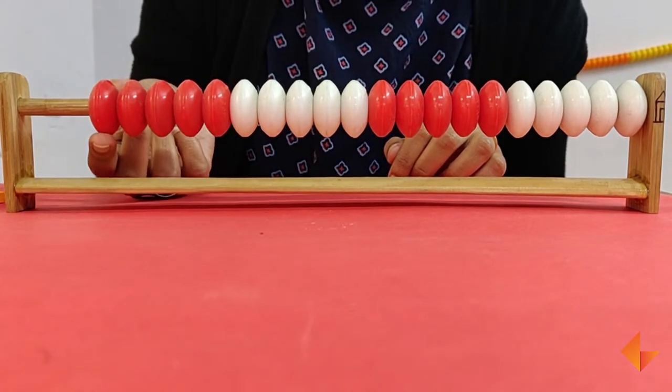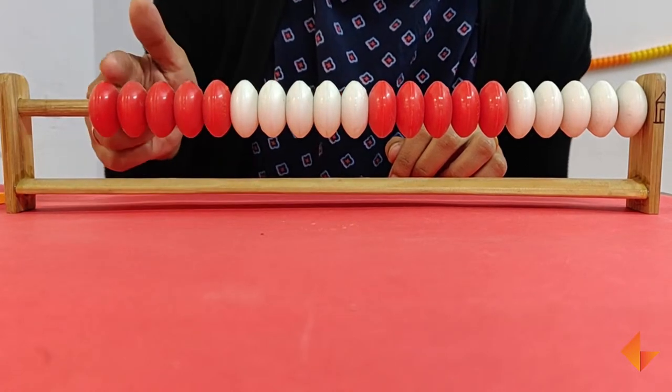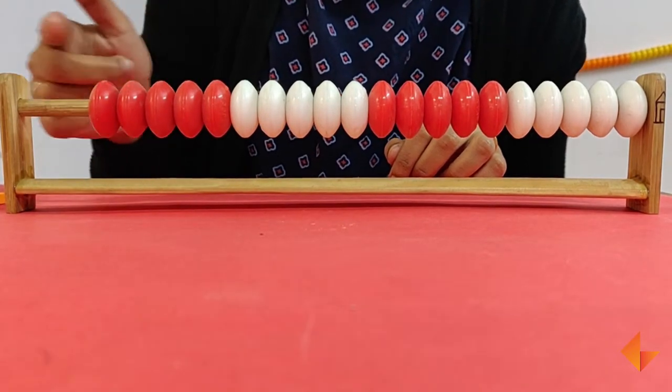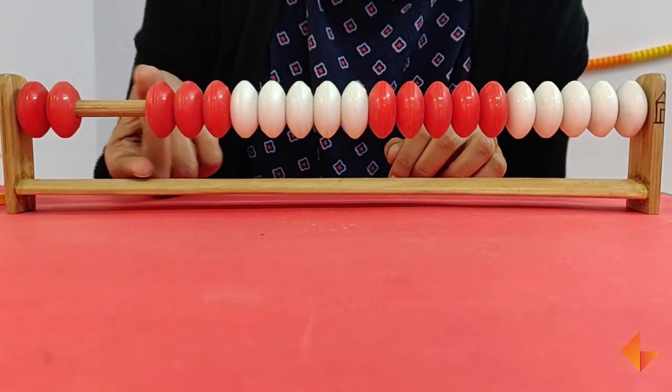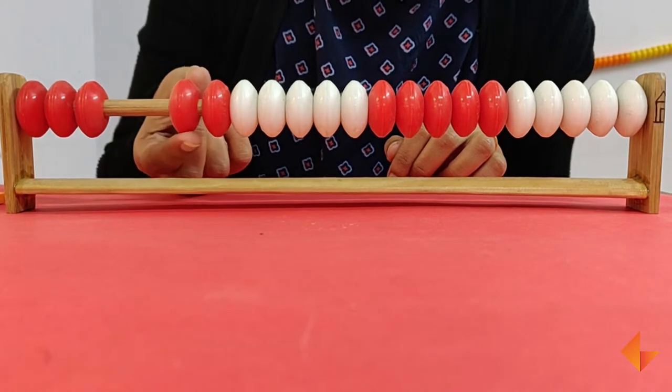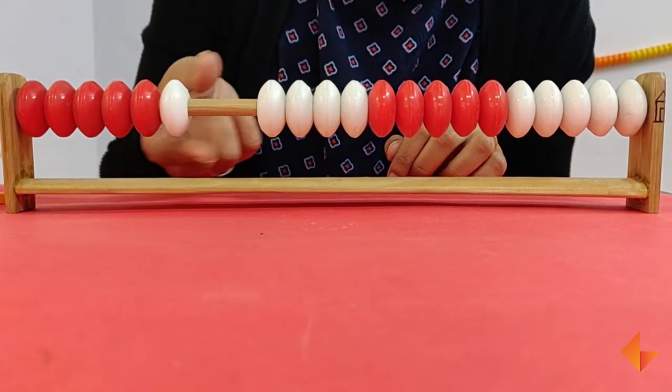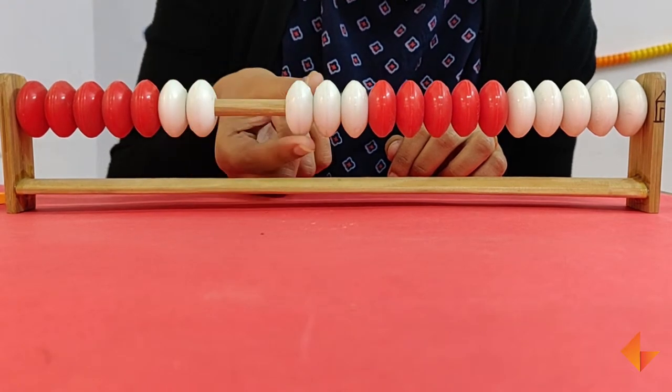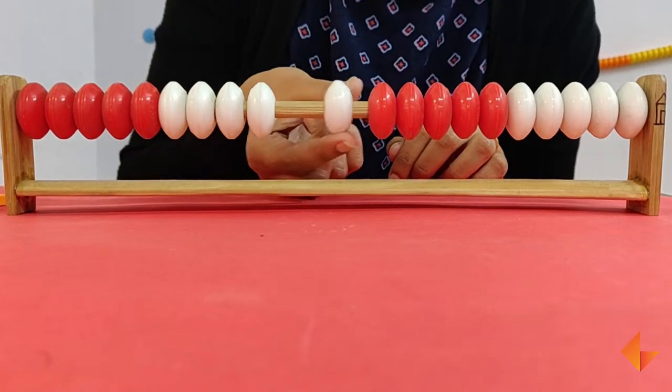As you count the numbers, move the beads one by one from the right towards the left: 1, 2, 3, 4, 5, 6, 7, 8, 9, 10.